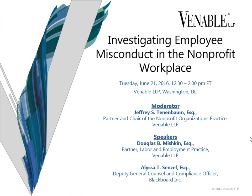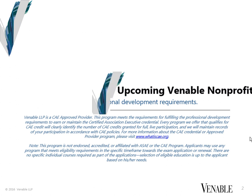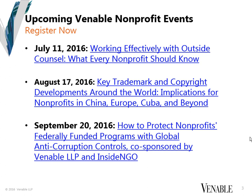For those of you in the Trade and Professional Association community, these programs are eligible for CAE Continuing Education credit. We have three upcoming programs scheduled. On July 11th, our program is entitled Working Effectively with Outside Counsel – What Every Non-Profit Should Know. On August 17th, our program is entitled Key Trademark and Copyright Developments Around the World – Implications for Non-Profits in China, Europe, Cuba, and Beyond.